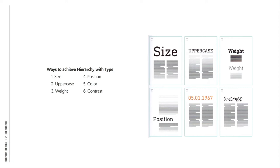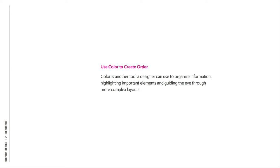You can use color to create hierarchy — bringing in pops of color after working in black and white. A bright orange or bright yellow can bring attention, while soft pastels may actually push content back. You can also use contrast: contrast with type, or contrast of clear space and type — having a lot of clear space with very little type brings emphasis down to that information. Color is just another tool a designer can use to organize information, highlighting important elements and guiding the eye through more complex layouts.